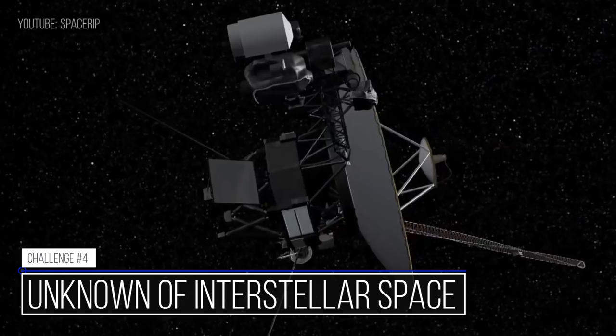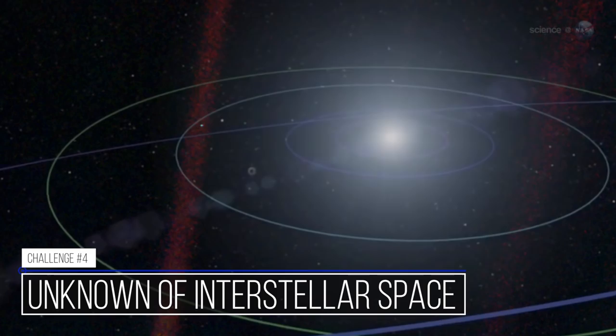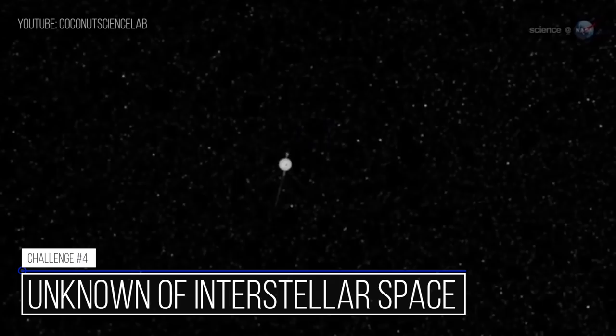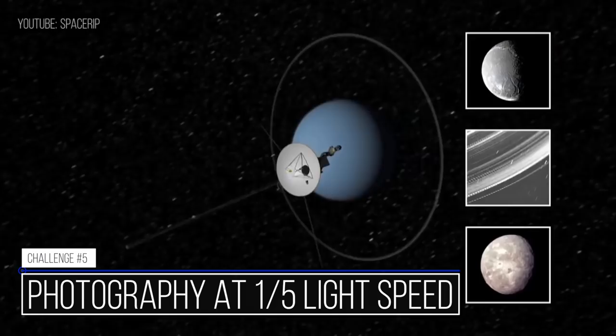Breakthrough Starshot will launch exploratory probes as soon as a prototype propulsion system is complete. While Voyager took incredible photos of the solar system, no camera has ever taken a photo while traveling at one-fifth the speed of light. No man-made object has ever even traveled that fast, period.